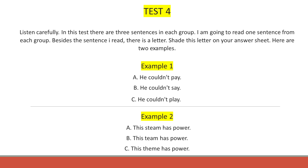Here are two examples. Example 1. He couldn't play. The sentence I read was sentence C. He couldn't play. So the correct answer for example 1 is C. This is recorded by shading answer space C against number 1.